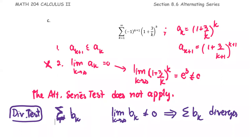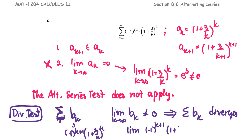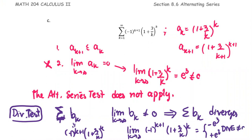Applying the divergent test, Bk is the term negative 1 to the power k plus 1, multiplied by 1 plus 3 over k raised to the power k. The limit of this expression as k approaches infinity will be either negative e to the third or positive e to the third, depending on the index as k goes along. So the limit doesn't exist, or the limit is not equal to 0 — therefore we can verify that this series diverges by the divergent test.